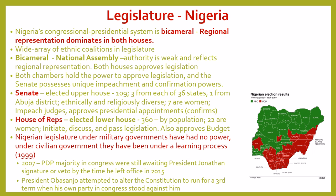Nigeria's legislature has historically operated under military governments, under which legislatures had no power. Under civilian governments it has been in a learning process — much like Mexico, Nigeria is democratizing, but Mexico is democratizing at a much faster rate. The legislature has struggled with legitimacy, and even though it constitutionally has significant power, it has been undermined by the executive branch, whose authoritarian tendencies have often eliminated the power of the legislature.